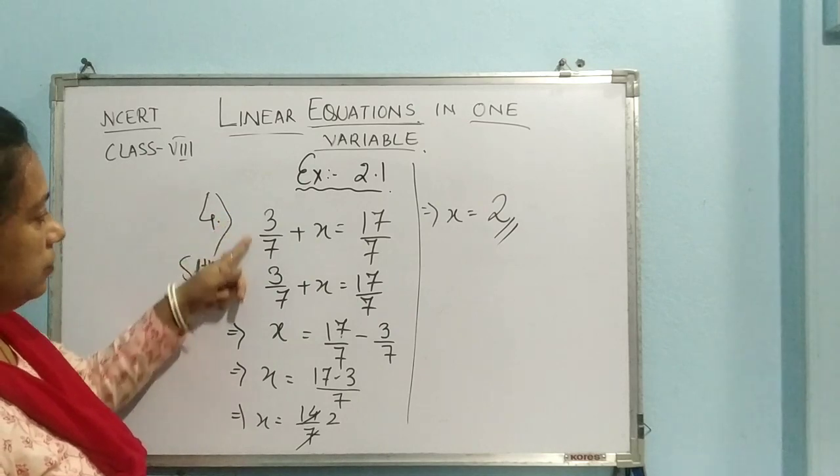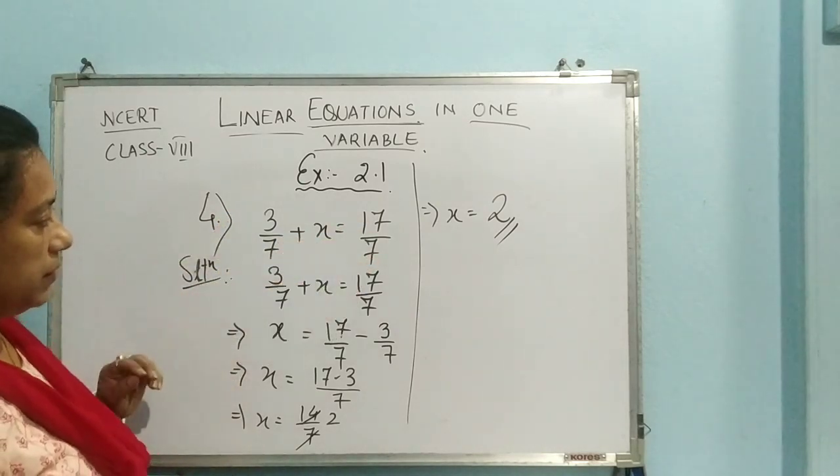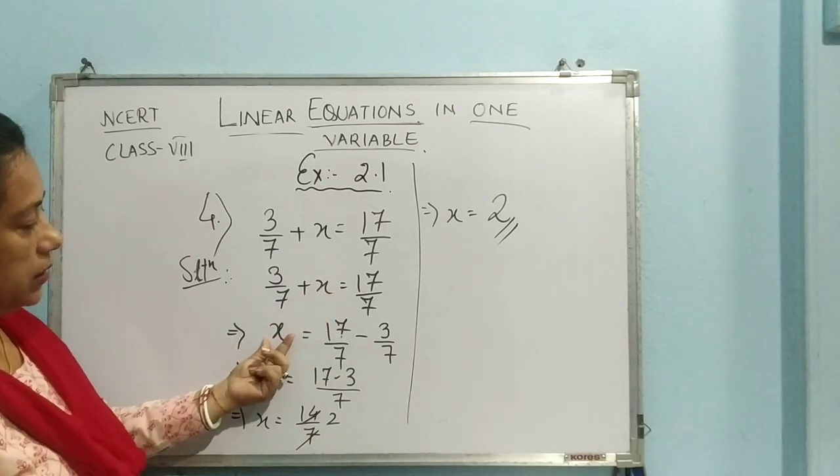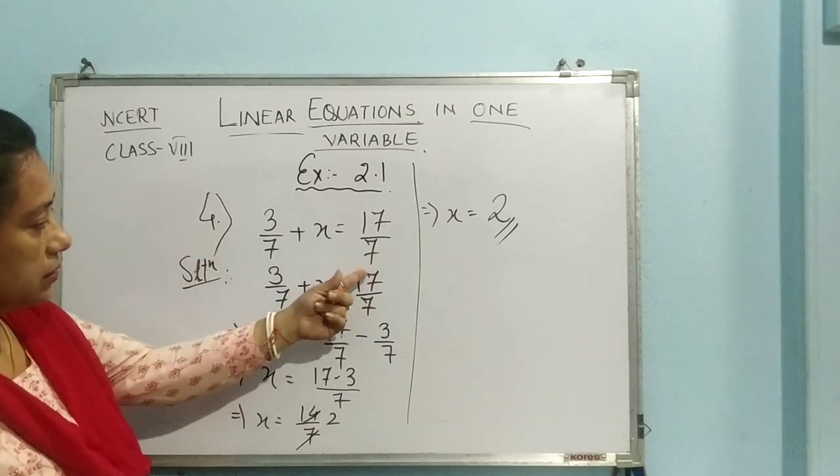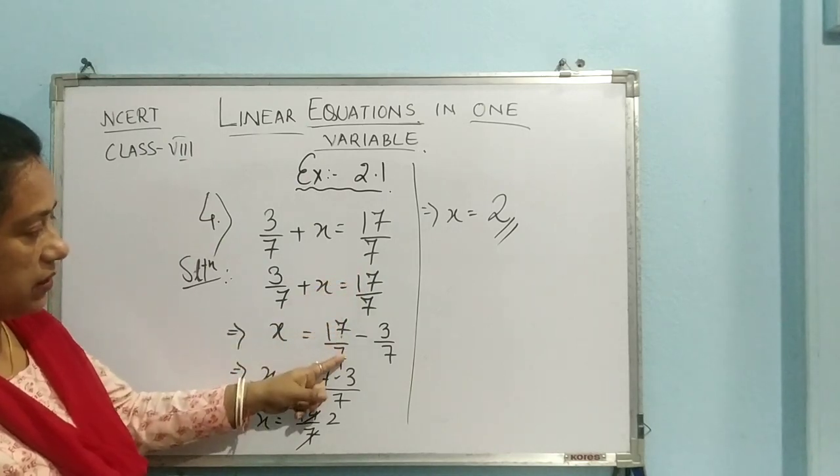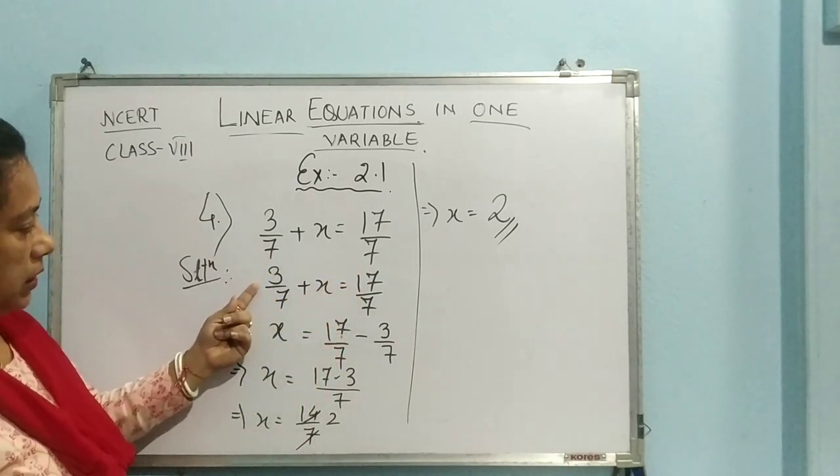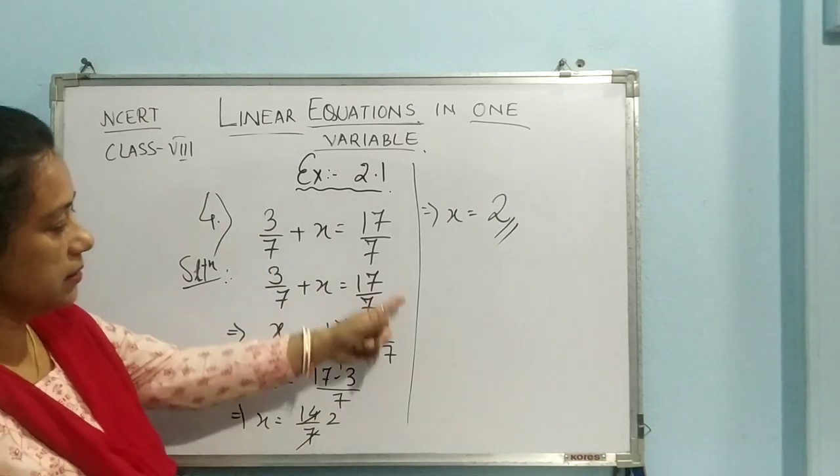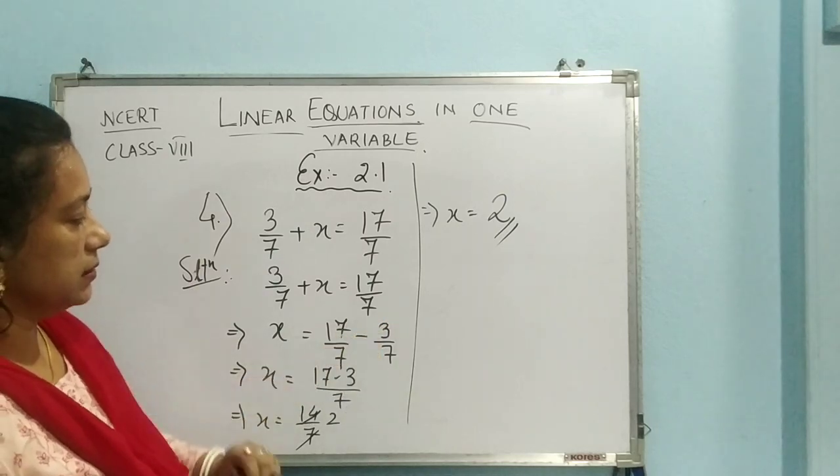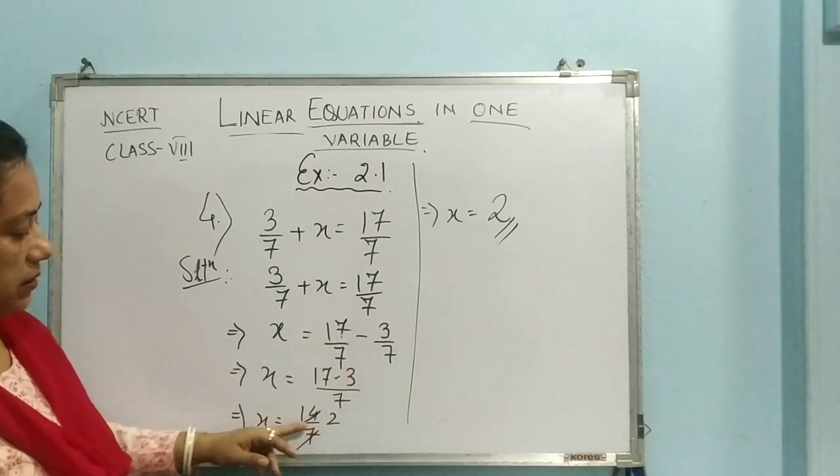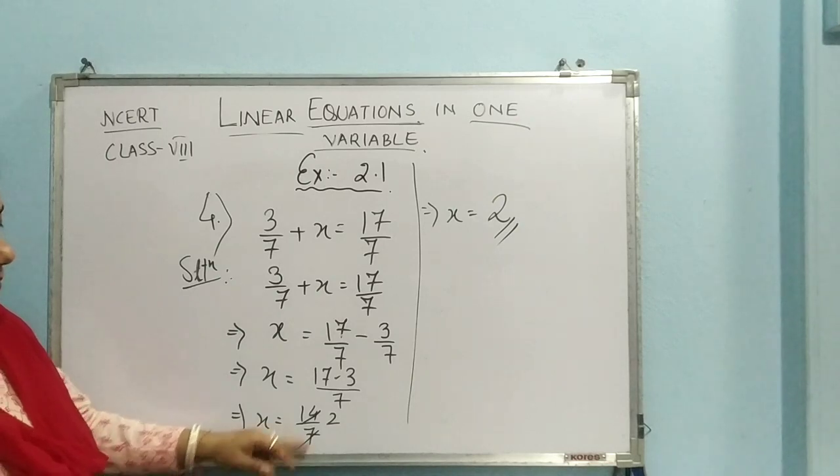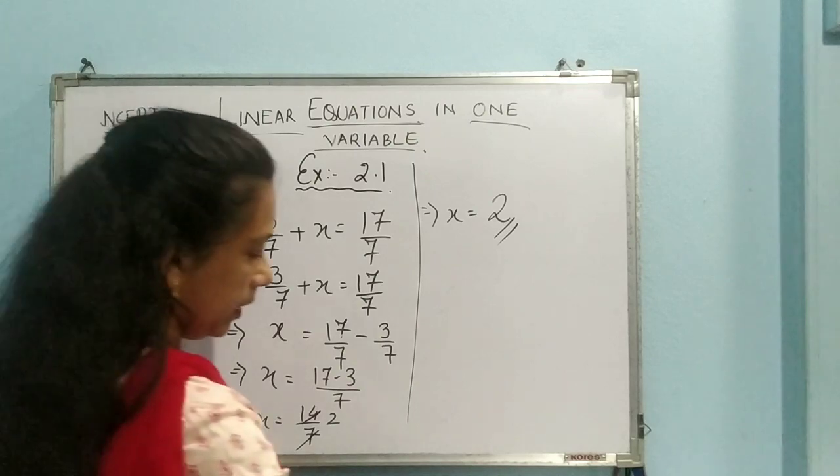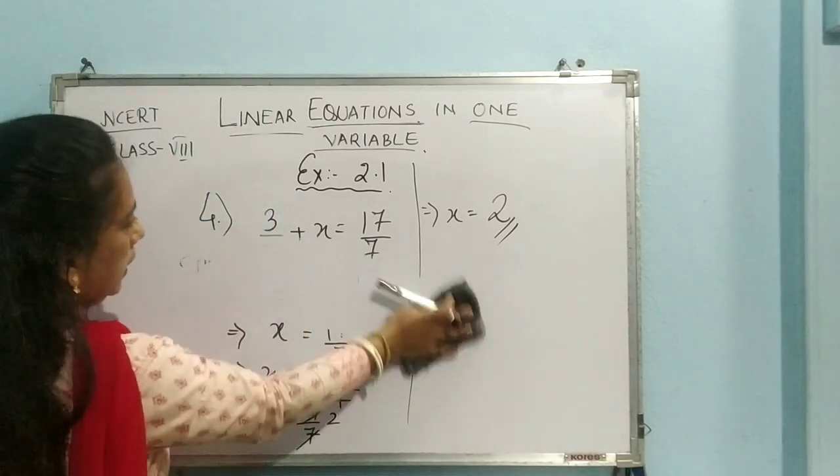I am explaining once again. Here, 3 by 7 plus x equal to 17 by 7. Since the variable is x here, we will be keeping only x in the LHS and the other things to the RHS. So here in the LHS, it is 17 by 7. 3 by 7 is there. It doesn't have any sign before 3 by 7. It means that the sign is plus. If it moves to the other side, it will become minus. So minus 3 by 7. Now, 17 minus 3 by 7, that is 14 by 7. 7 and 7 goes, 14. Hence, the answer is 2. So question number 4, done.